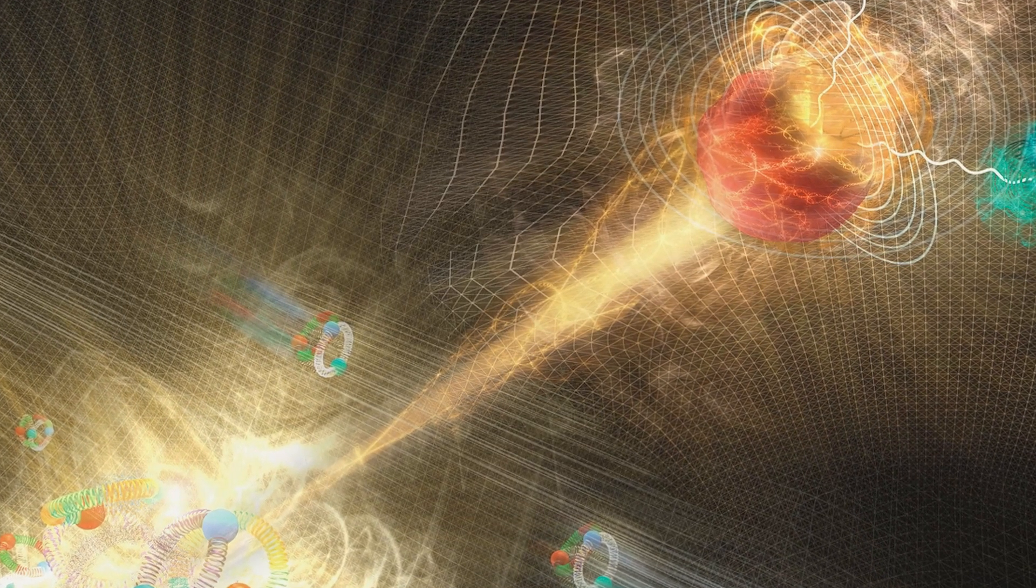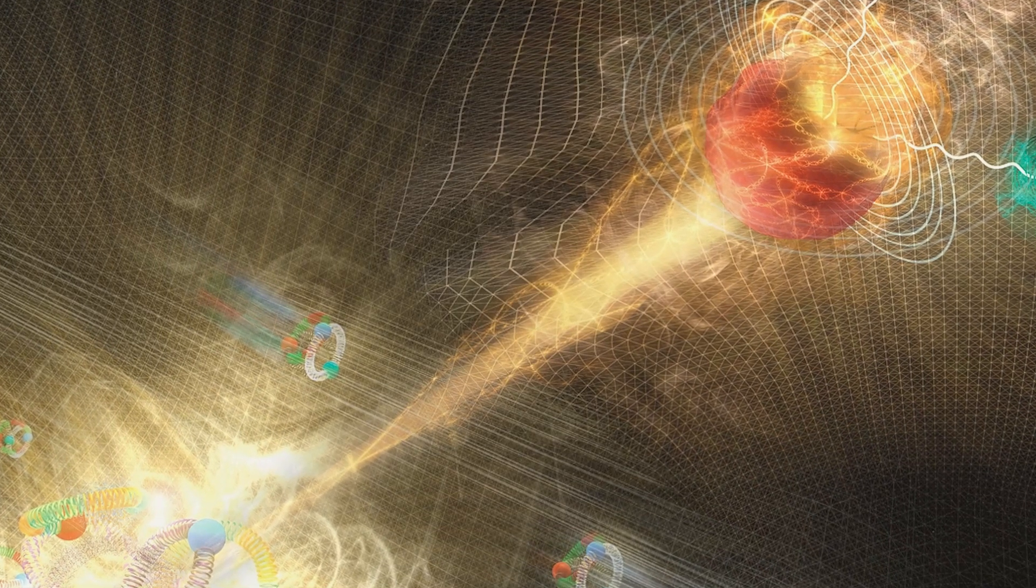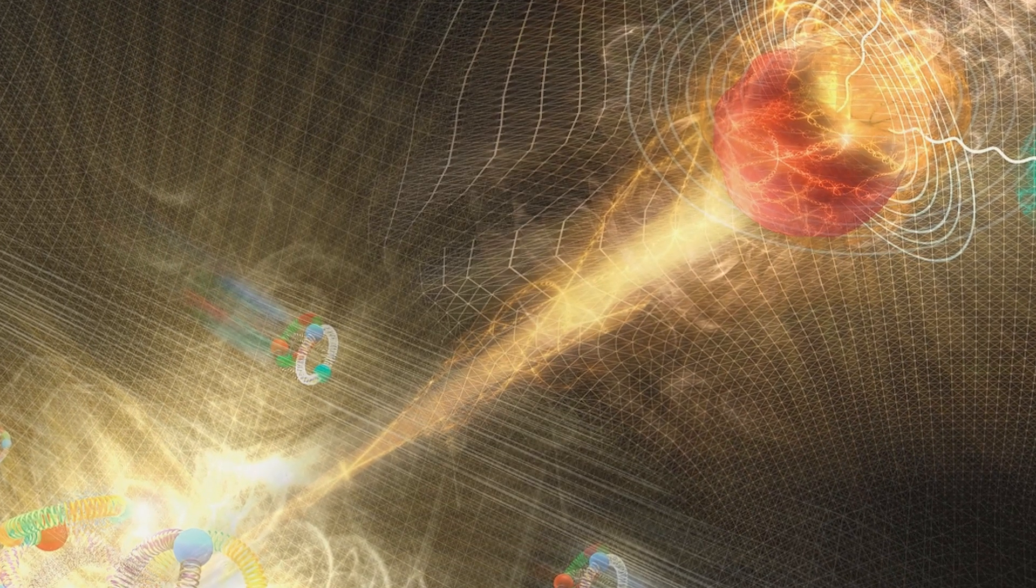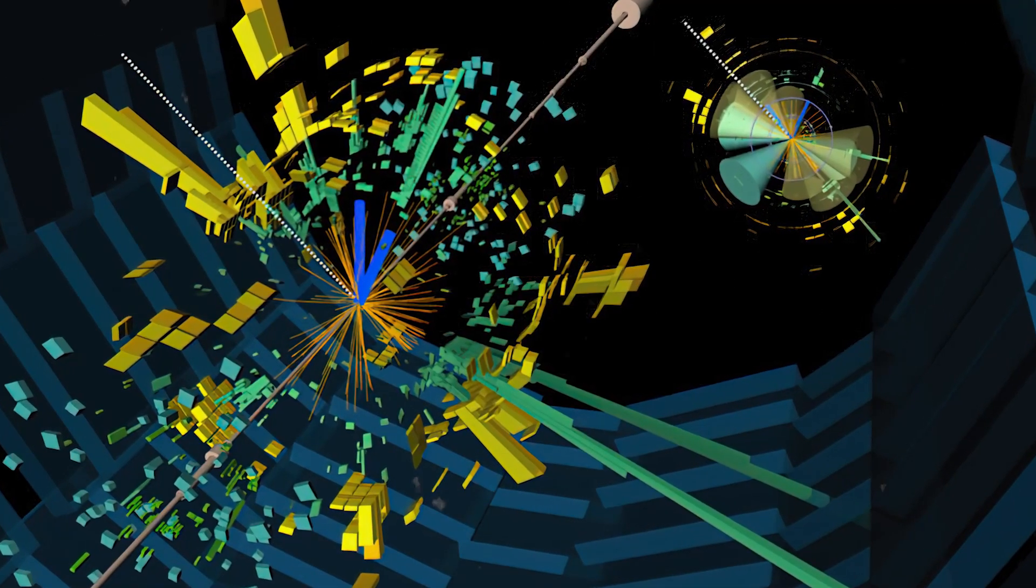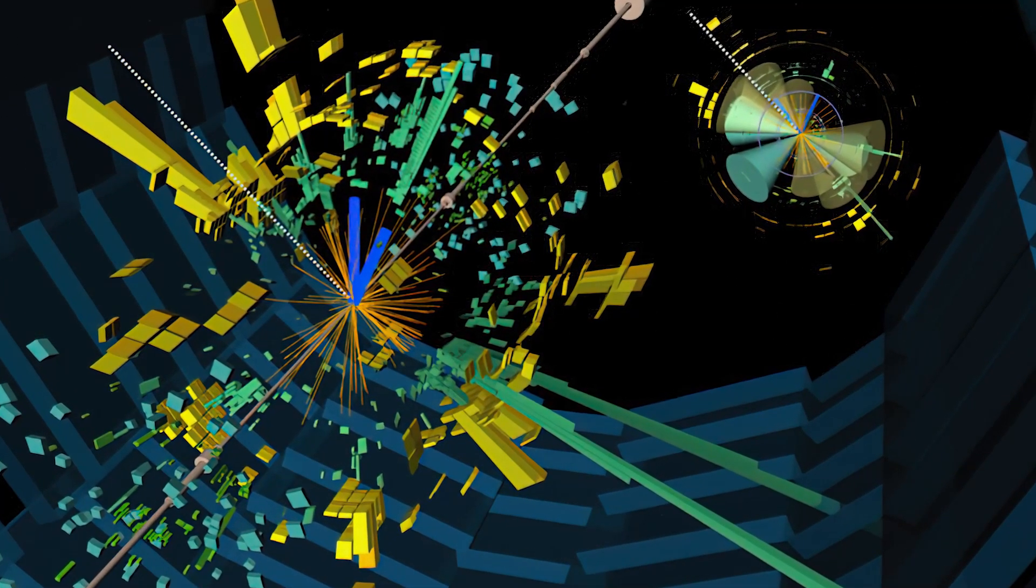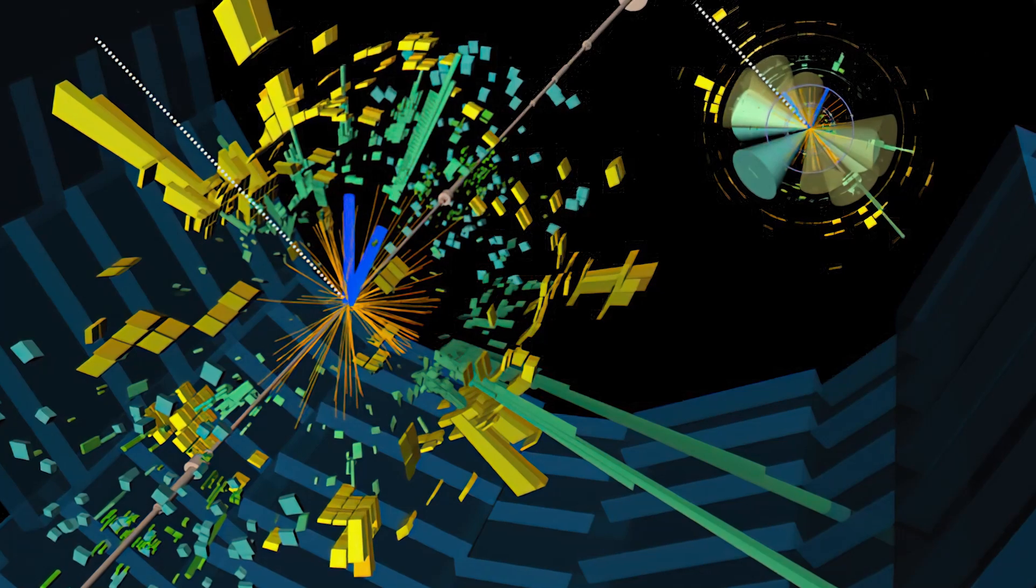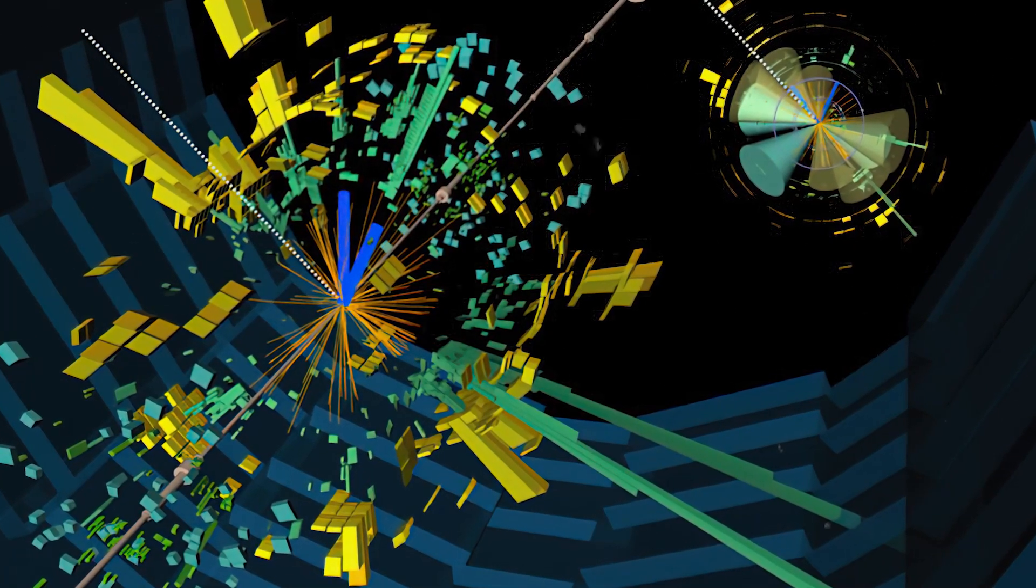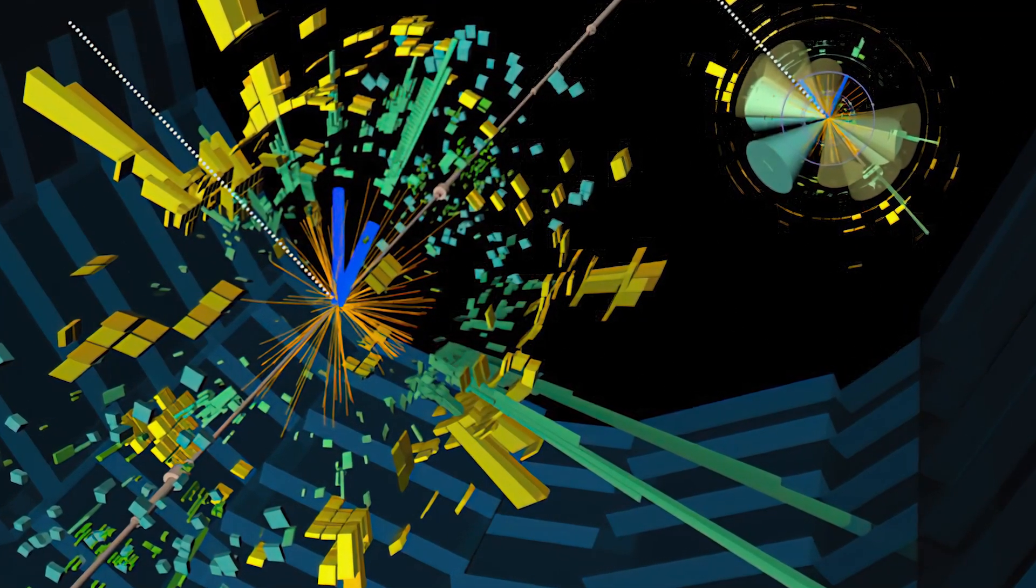In the Higgs boson's case, the field came first. The Higgs field was proposed in 1964 as a new kind of field that fills the entire universe and gives mass to all elementary particles. The Higgs boson is a wave in that field. Its discovery confirms the existence of the Higgs field.